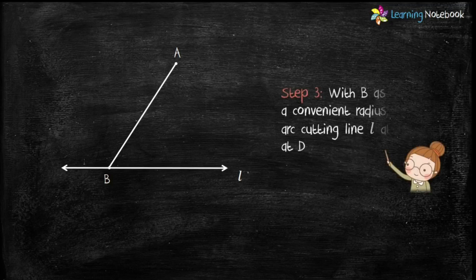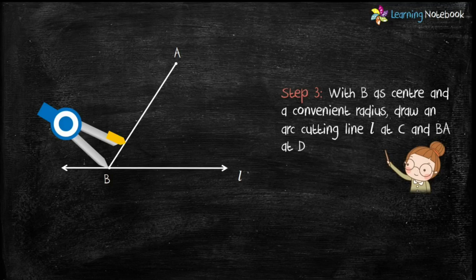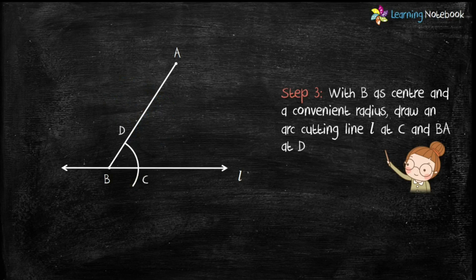In step 3, with B as center and a convenient radius, draw an arc which cuts line L at point C and line BA at point D.